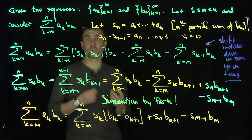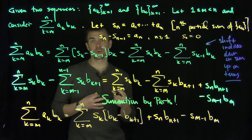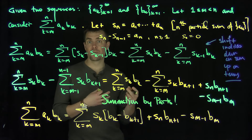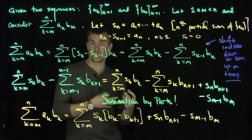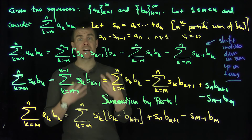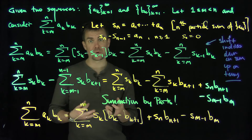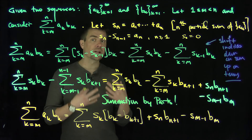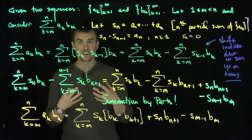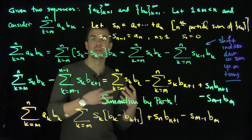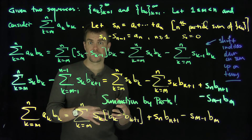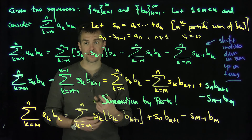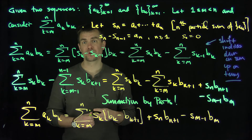Summation by parts is very useful for proving convergence results about products of series — for example, alternating series like (−1)^k / k, or trigonometric series like sin(kx) * a_n. Proving boundedness results for certain sequences together with estimates on other parts allows you to determine convergence of product series. Thank you very much.